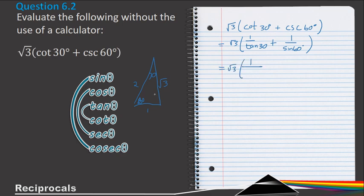So for tan 30°, I have tan is opposite over adjacent, so that is going to be 1 over √3,